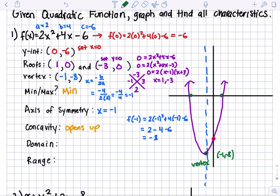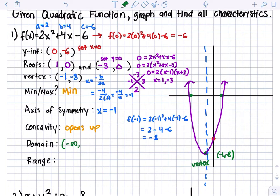Now let's get the domain. How far left does this graph go? If you follow this graph and always move to the left, it's just going to go infinitely to the left — so negative infinity. And how far right? All the way to infinity. The range: how low does this graph go? The lowest y-value is going to be negative 8. So the range is bracket negative 8 to infinity. And there's all your information for number 1.